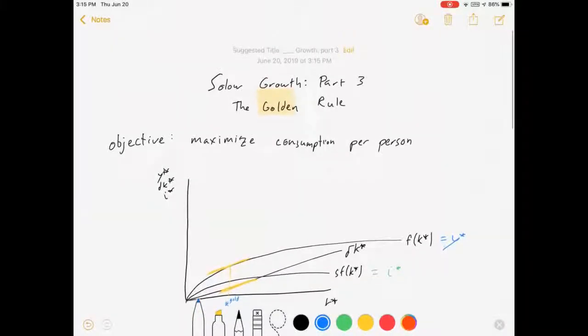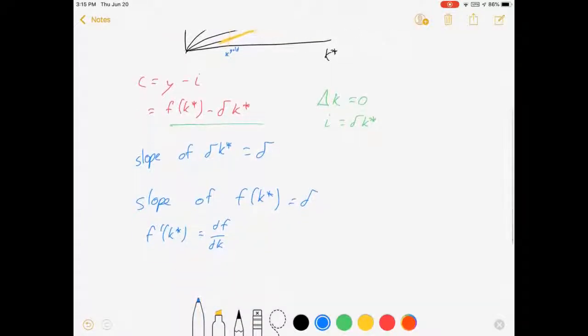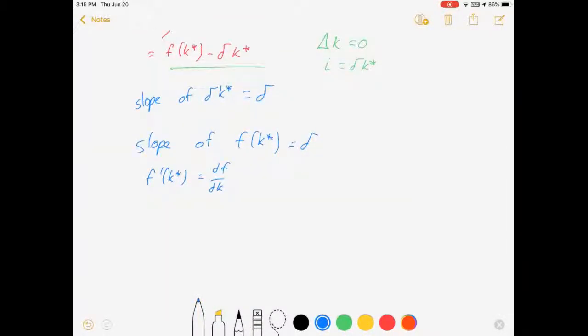Alright, so in the example that I had earlier I said that F of K was equal to the square root of K. Well if that's true then my slope is equal to 1 over 2 square root of K.